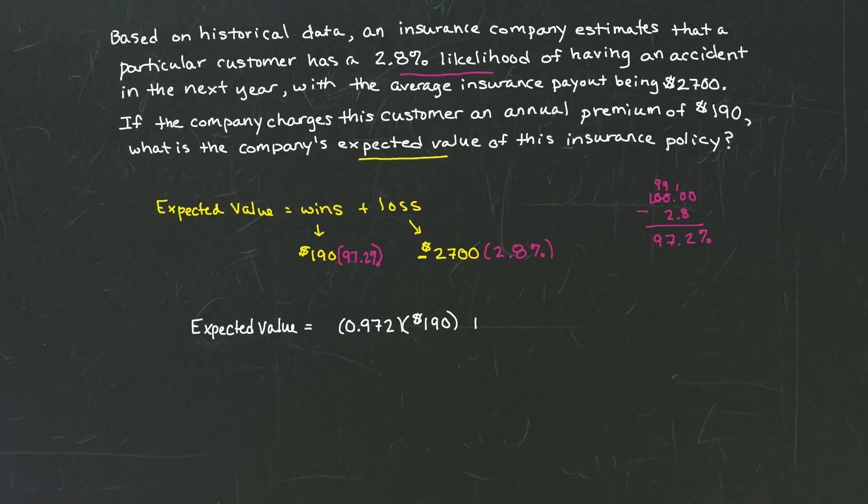We're going to add to that a loss. Now, when I think about the loss, I have to go one more step here. The insurance company is going to pay out $2,700, so they're going to lose $2,700. But remember,